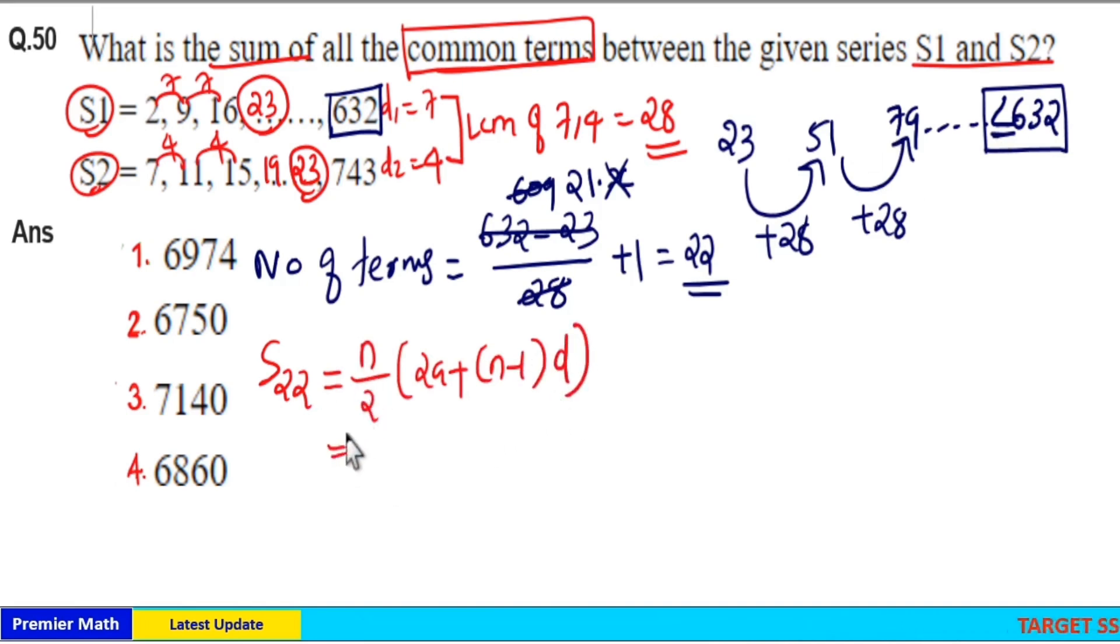Here n is total number of terms, which is 22. 22 by 2 is 11. 2a means 2 into 23 which is 46. n minus 1 is 21 into difference 28. Common difference is 28.